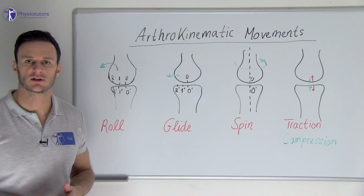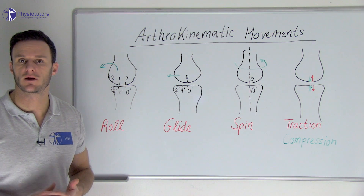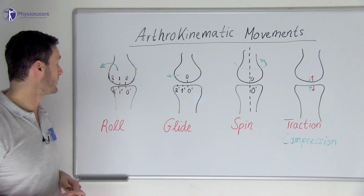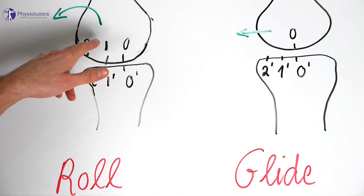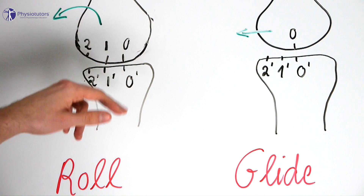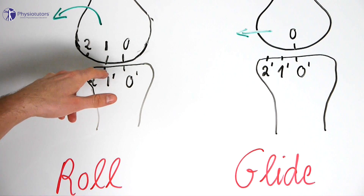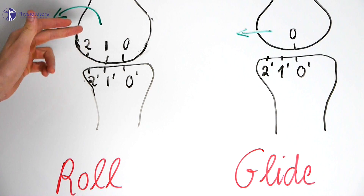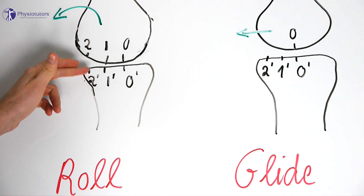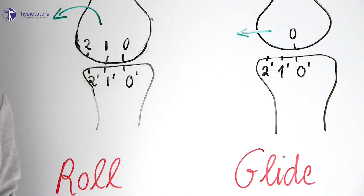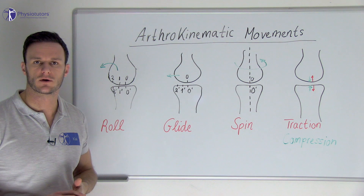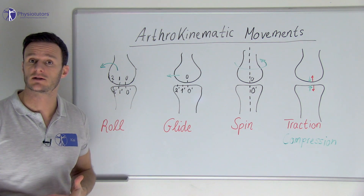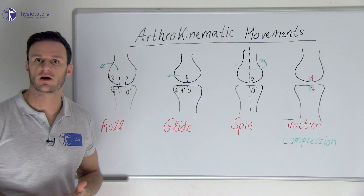In case of a roll movement, which is a rotation, new points of both joint surfaces will make contact with each other. So if we roll to the left, point one of the convex part will come into contact with point one of the concave part, point two of the convex part will come into contact with point two of the concave part and so on. Rolling always occurs in the same direction as the angulating bone, whether the surface is concave or convex.